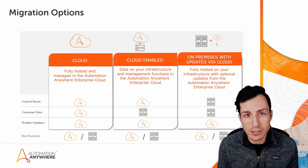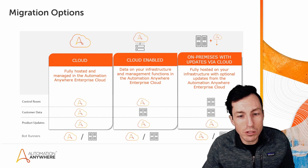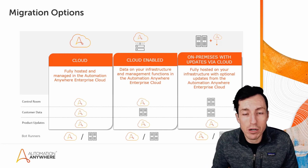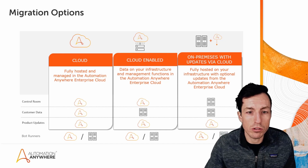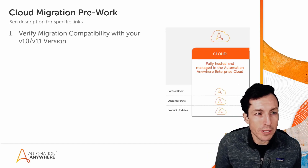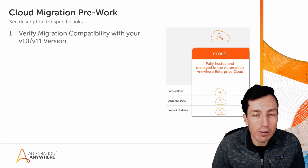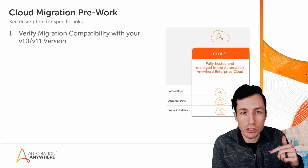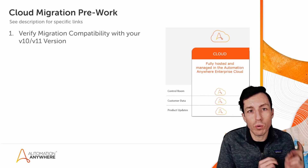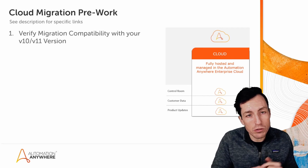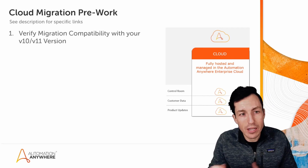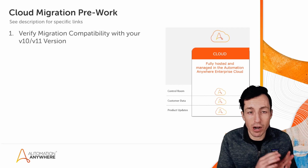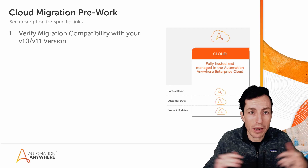For this session we're going to focus exclusively on cloud. If you're doing an on-prem migration we'll have another video just for that. So specifically, the pre-work we need to take care of: number one is verify your version compatibility. Make sure that you are compatible with the cloud migration utility you're about to use, and that your specific version of v10 or v11 is compatible for migration. You may have to do a small upgrade first, but compatibility has been expanding with every release.